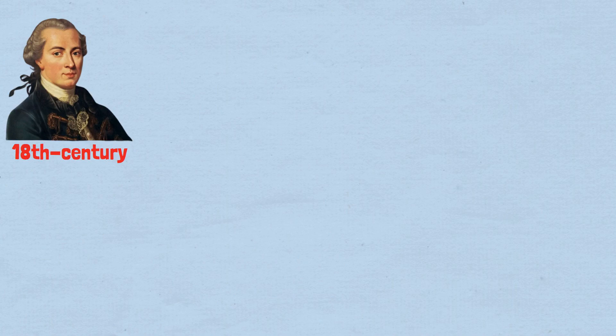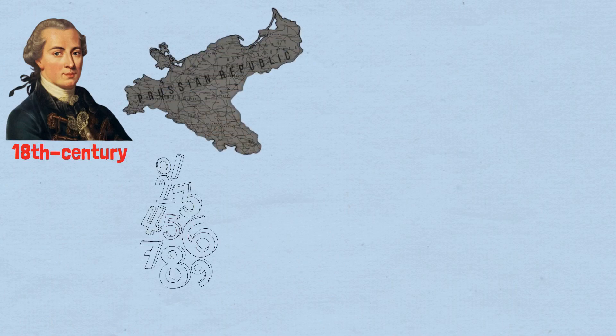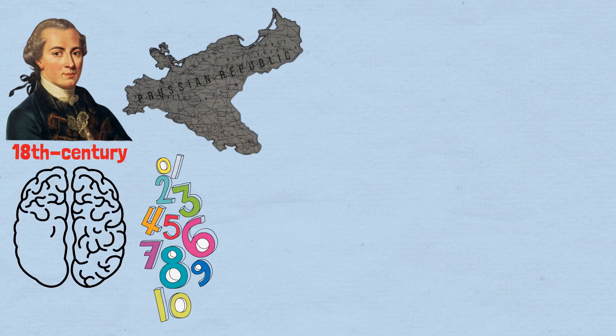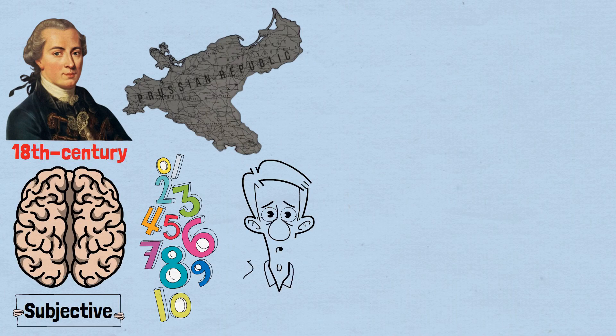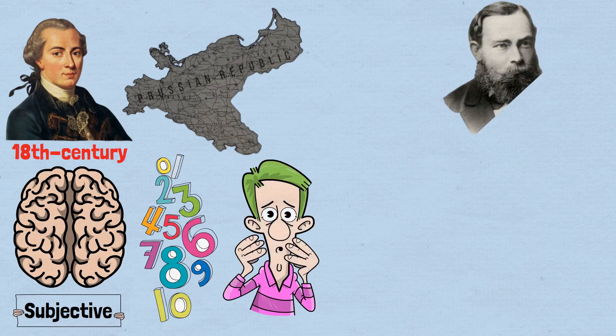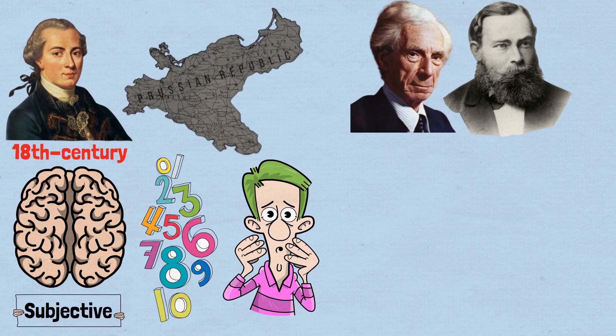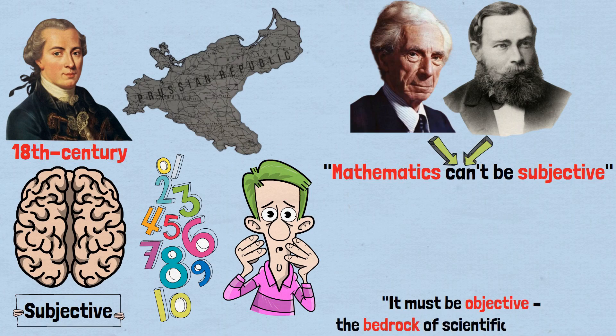The story begins with Immanuel Kant, the influential 18th century Prussian philosopher. Kant had argued that mathematics was essentially a construction of the human mind, subjective in a sense. This conclusion deeply troubled later philosophers like Gottlob Frege and Bertrand Russell. Mathematics can't be subjective, they insisted. It must be objective, the bedrock of scientific certainty.